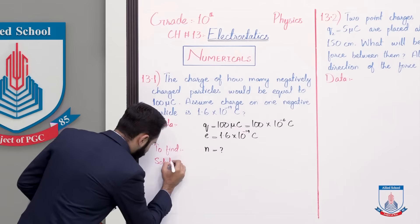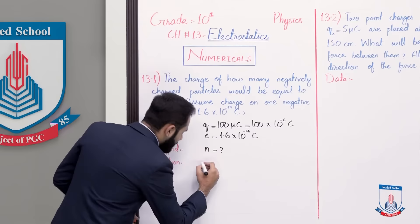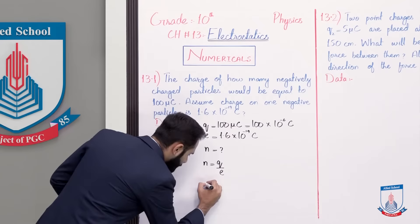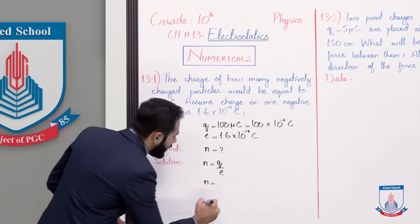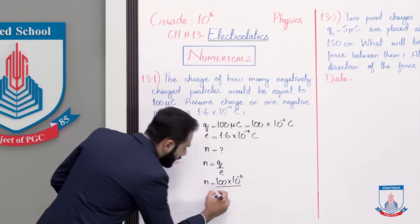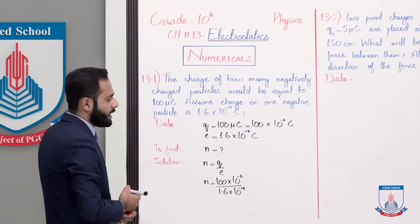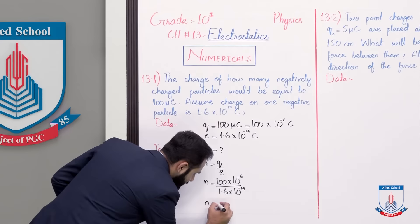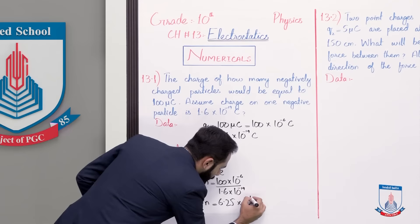As we know that n is equal to q by e. Putting values: n is equal to q ki value 100 multiplied by 10 to the power minus 6, divided by 1.6 multiplied by 10 to the power minus 19 coulomb. After dividing, n is equal to 6.25 multiplied by 10 to the power 14.